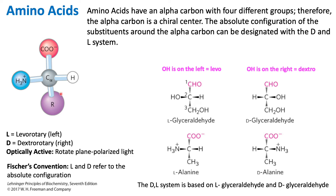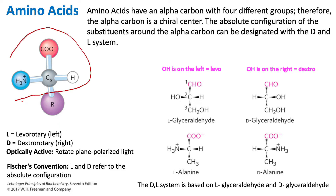Within amino acids, we have a central alpha carbon, a hydrogen, a carboxyl group, an amino group, and an R group. What's important to note is that in this general structure of an amino acid, we have four different substituents. This R group is what is different for all 20 of the amino acids, so this part of the amino acid structure is the same for all amino acids — we just differ in R groups.